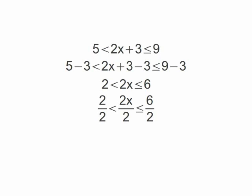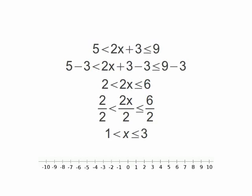The inequality simplifies to 1 is less than x is less than or equal to 3. We'll graph this by placing an open circle on 1, a closed circle on 3, and shading the line in between the two.